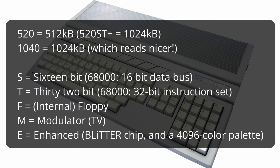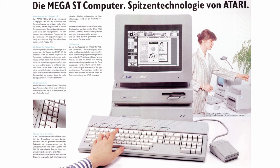They switched over to the 1040 models, and this indicates the size of the main memory: 1040 stands for one megabyte and 520 for half a megabyte, so they just rounded it a bit. Until I did this research I had no idea what those letters stand for. The S and T: S stands for 16-bit and T for 32-bit, meaning 16-bit is the size of the data bus of the Motorola 68000 main processor.